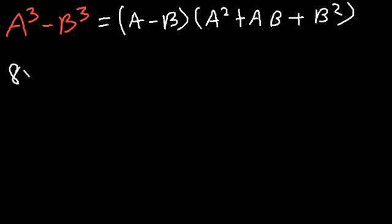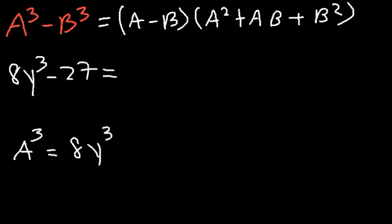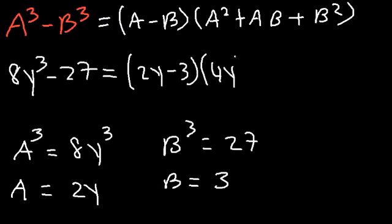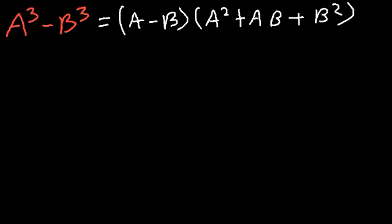Try this one: 8y³ - 27. Here a³ = 8y³ and b³ = 27, so a = 2y and b = 3. The answer is (2y - 3)(4y² + 6y + 9). These problems aren't too difficult — let's try some different examples.